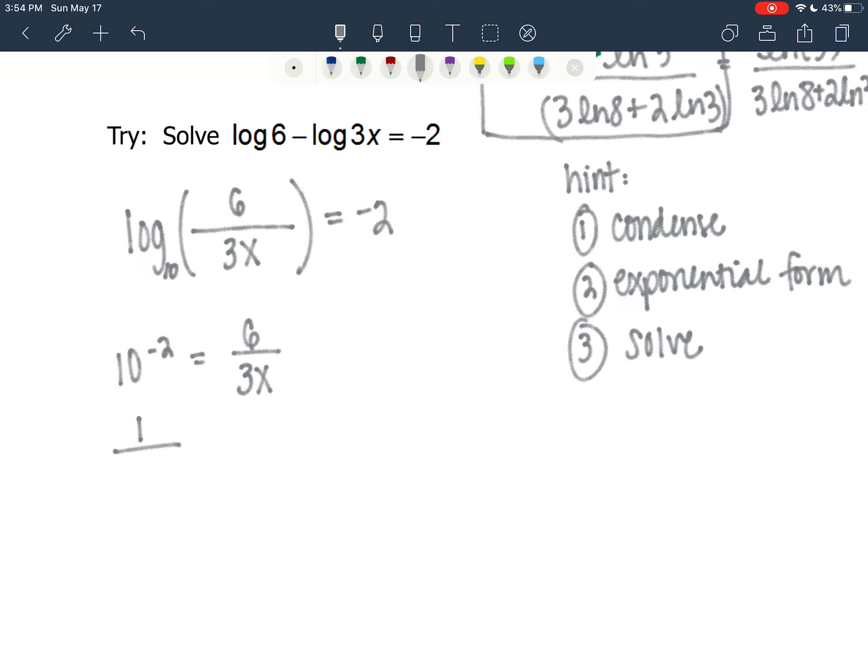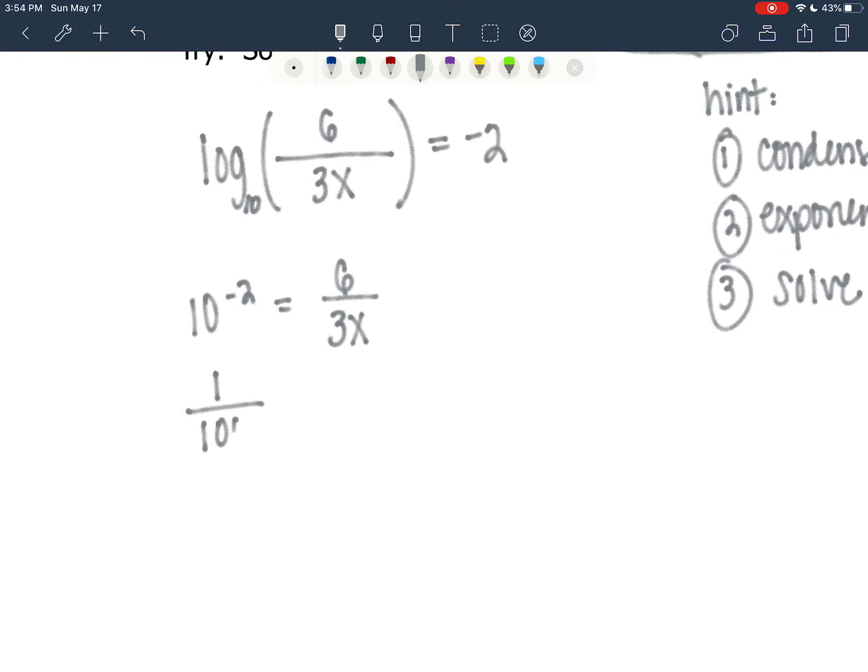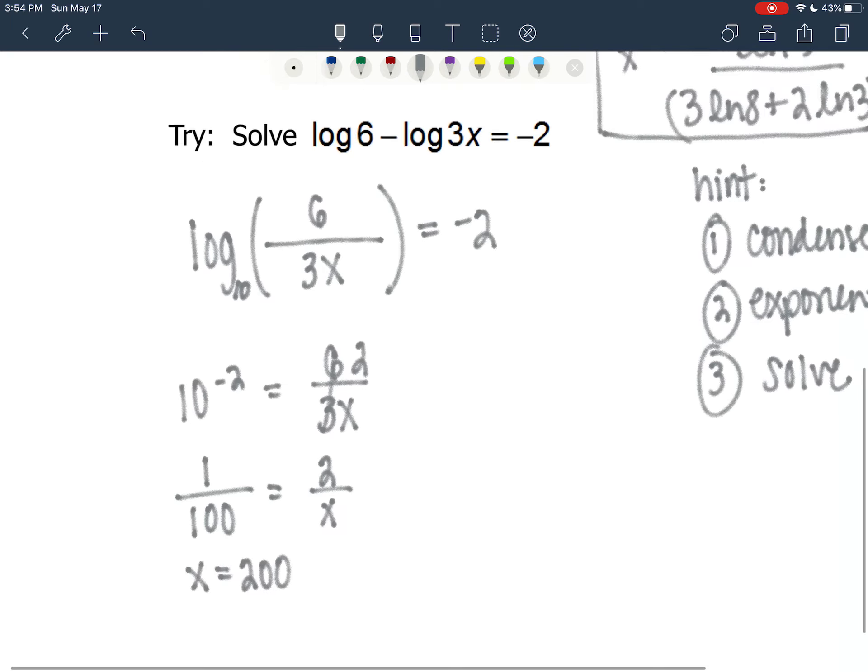I can reduce that. The left side of the equation is 1 over 100. 1 over 100 equals 2 over x. 6 divided by 3 is 2. I'm going to cross-multiply. x equals 200.